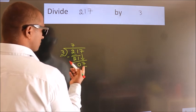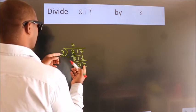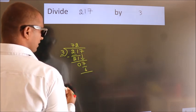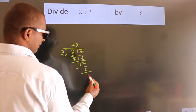A number close to 7 in the 3 table is 3 times 2 is 6. Now we subtract. We get 1.